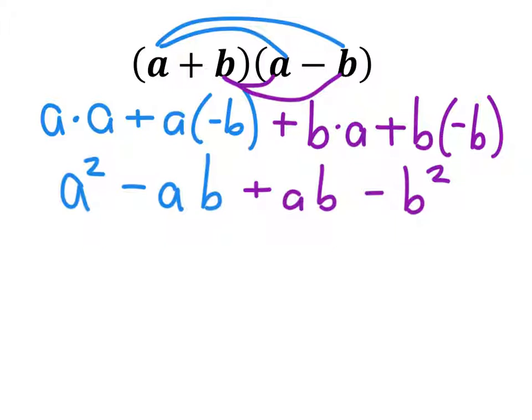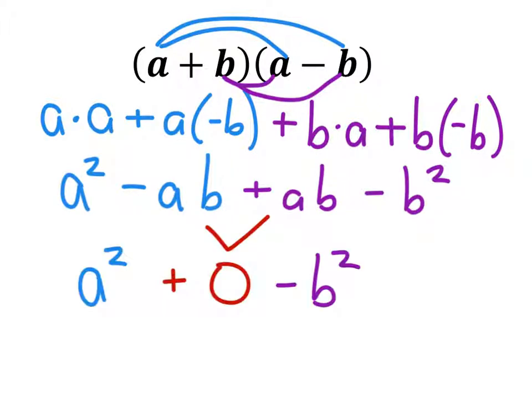Notice what we have in the center here — we've got a negative ab plus an ab. When I combine those two, I get zero. And if we just ignore the zero, in other words we make it a phantom zero, then we've got an a squared minus b squared. And that's what we set out to do in the first place. So that concludes how these two here at the top give us these two squares at the bottom.